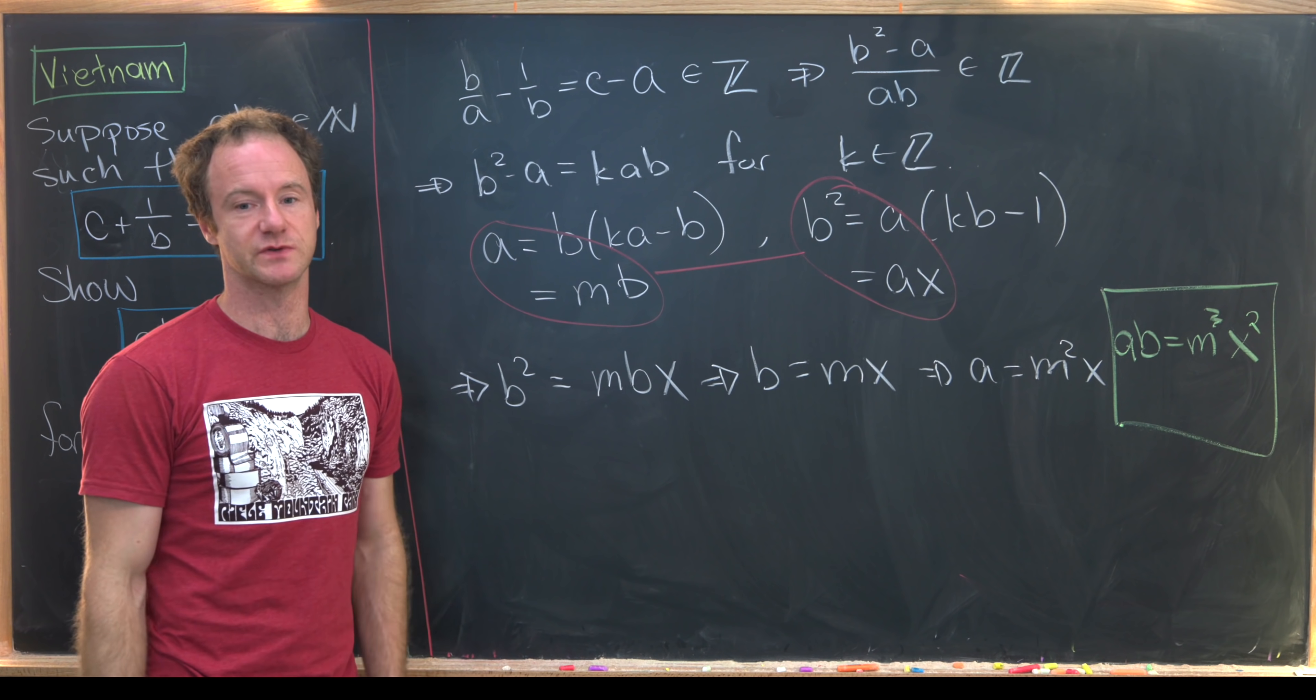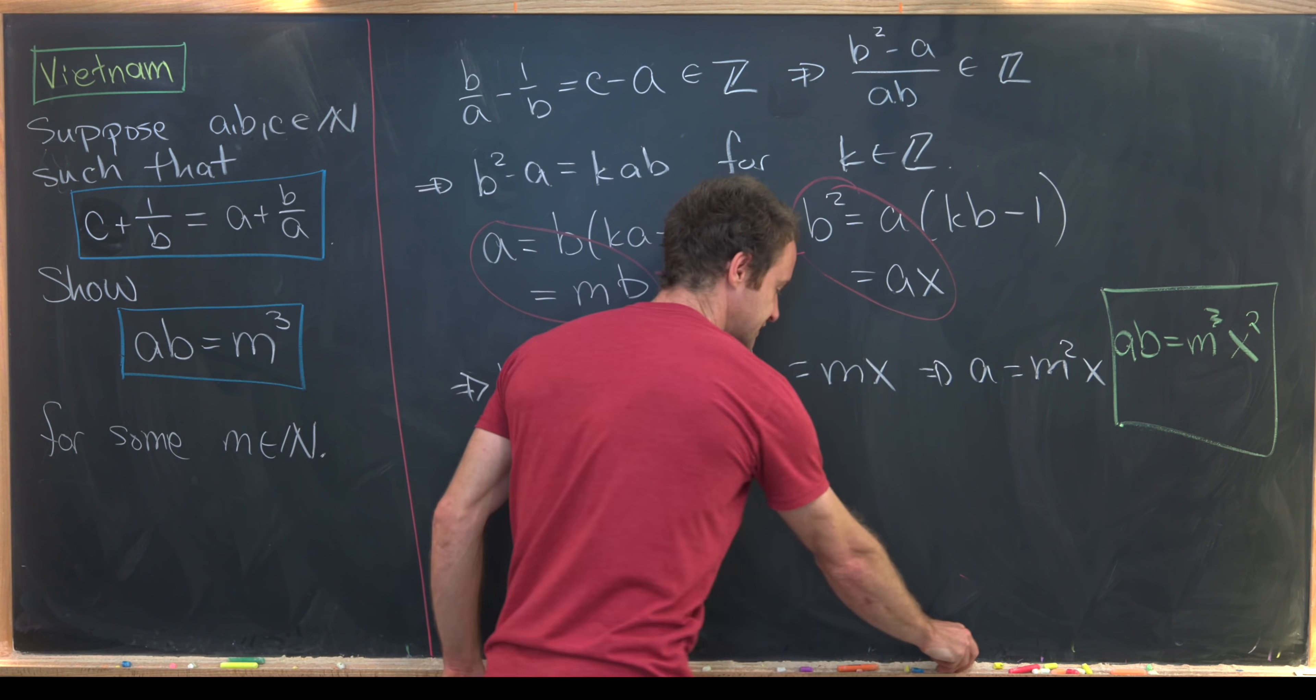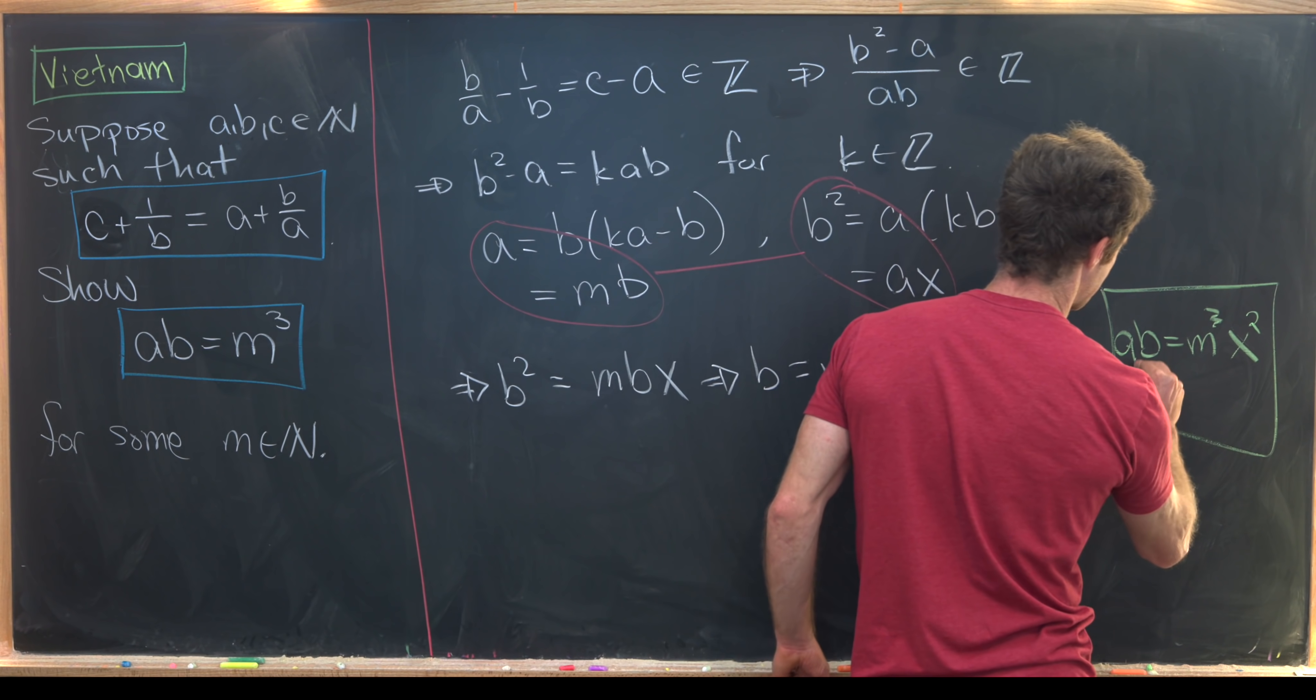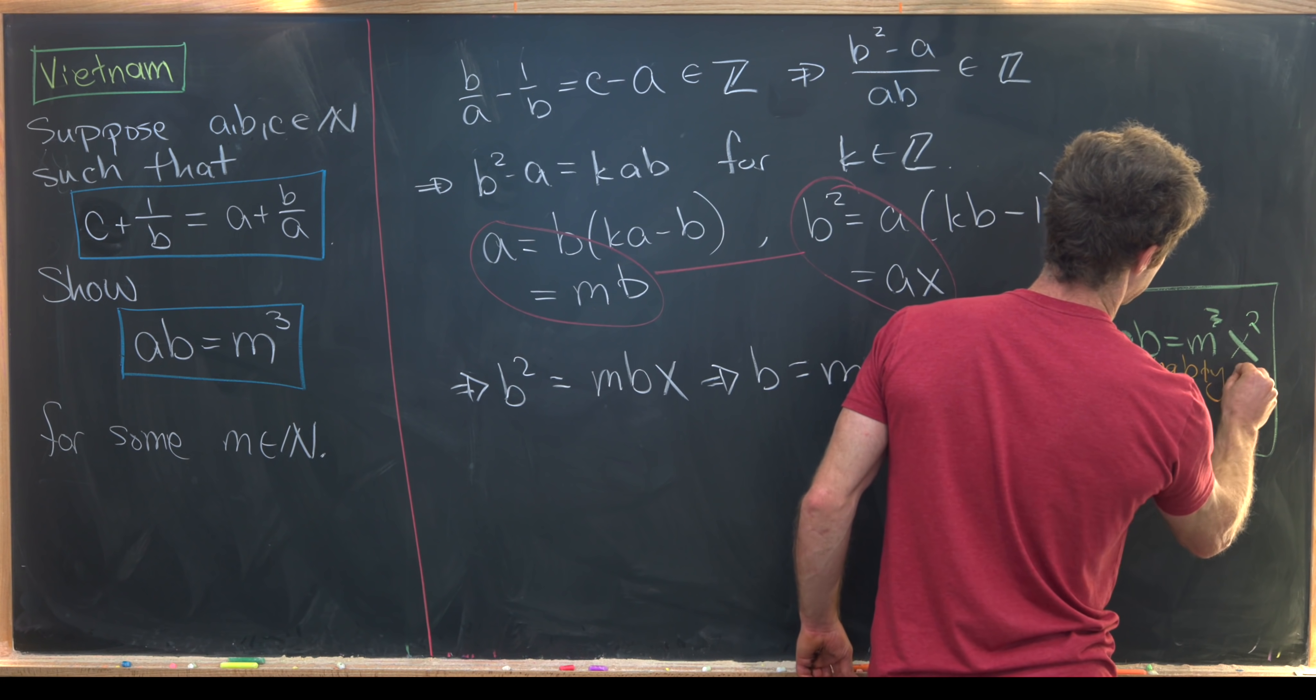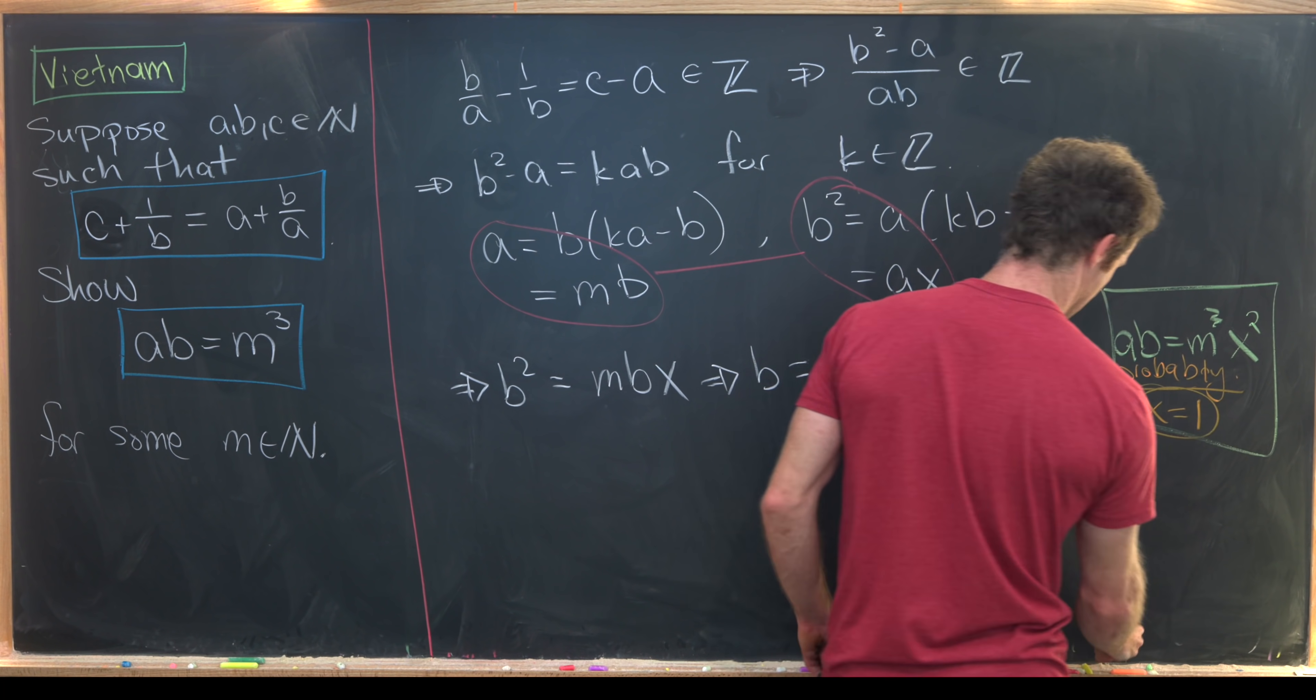So what's maybe the simplest perfect cube? Well, it's probably one cubed, which is equal to one. So keeping that in mind, I'll just put probably here, we have X is equal to one.